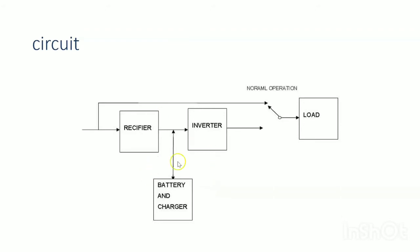Both online and offline UPS have a rectifier, battery or battery bank, inverter, and a switch. The key difference is that in online UPS, the rectifier-inverter path is the normal operation path, while the main supply path is only occasionally used. In online UPS, the rectifier-inverter always provides power to the load.